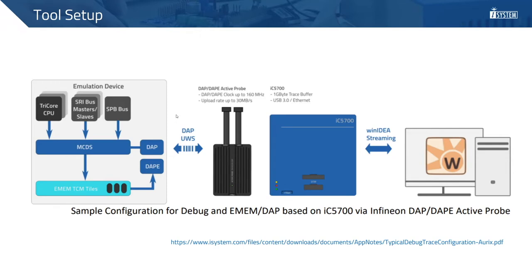This slide is about the tool setup I will be using for the live demonstration. I am using an Infineon demo board with MCU TC375X. The demo board is connected to an IC5700 with an Infineon DAP-E ActiveProbe. I will be using on-chip ETM tiles for trace, so trace recording will be very limited. You can also use the uploaded sampling method for a longer trace depending on the use case. I would request you to visit our website or YouTube webinar channel to know more about AURIX tracing or advanced use cases.